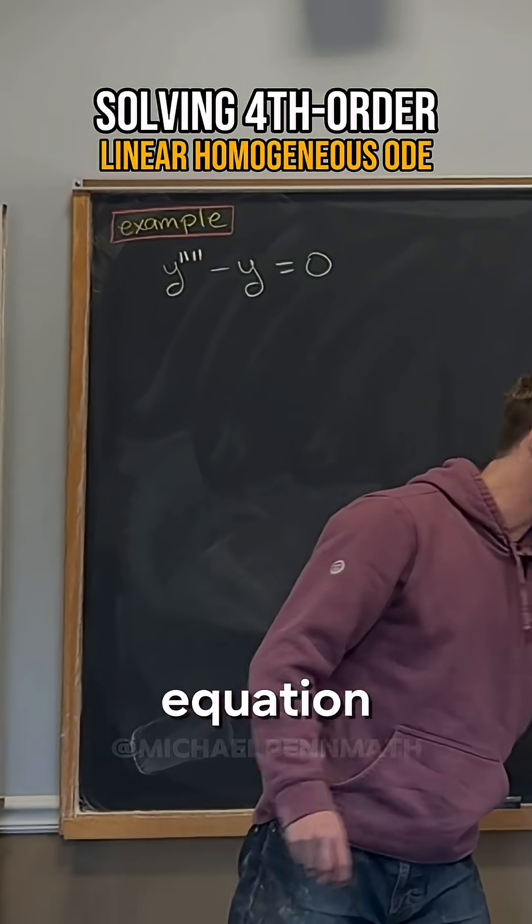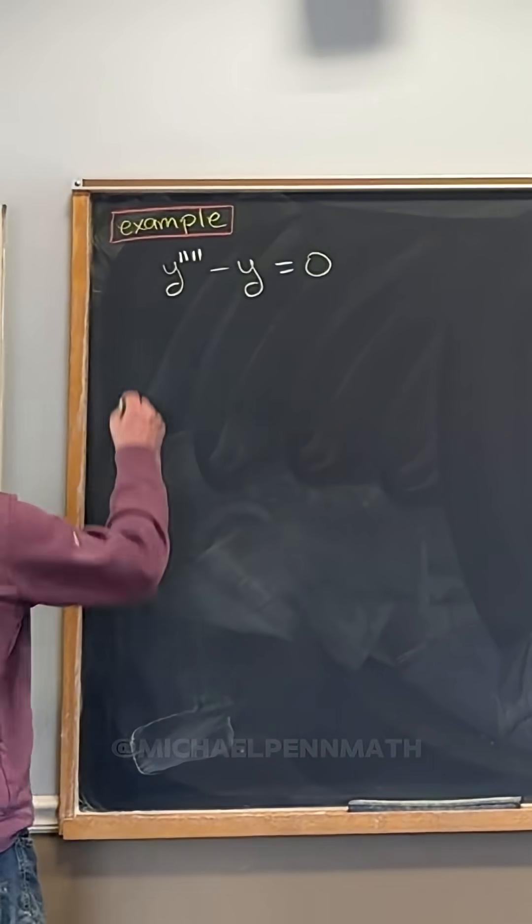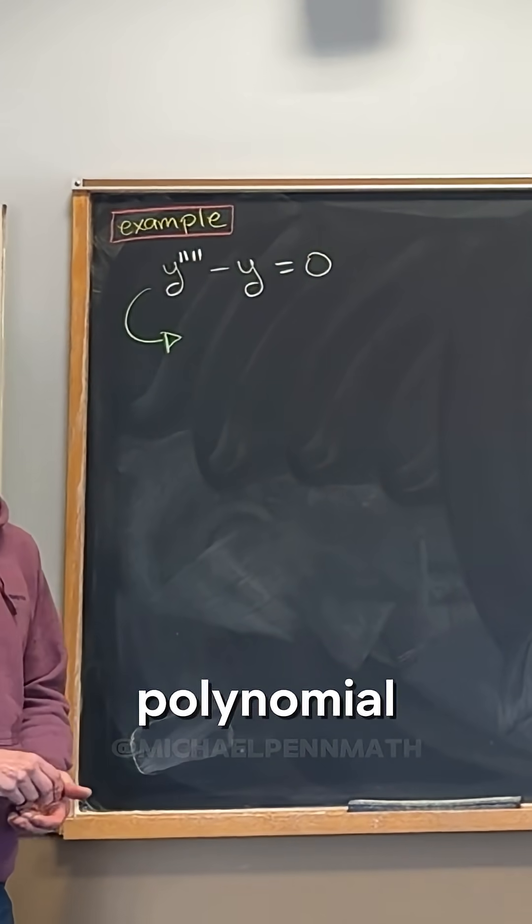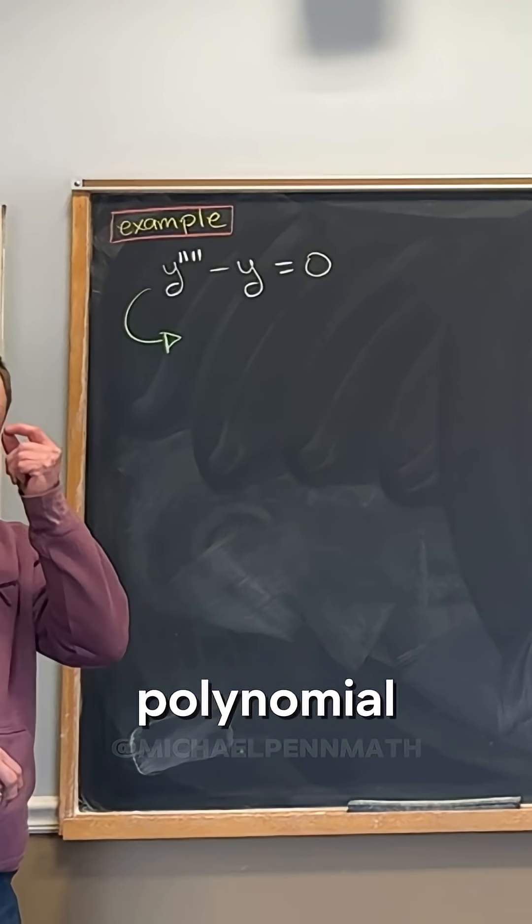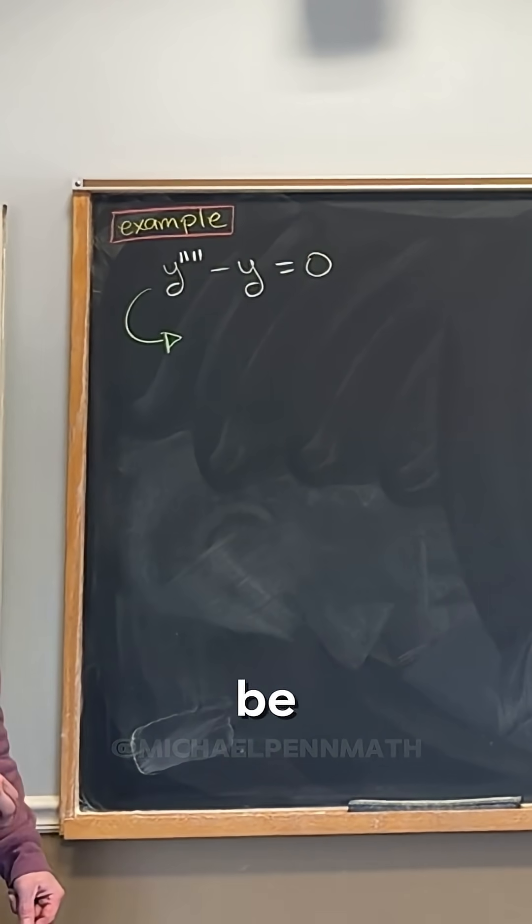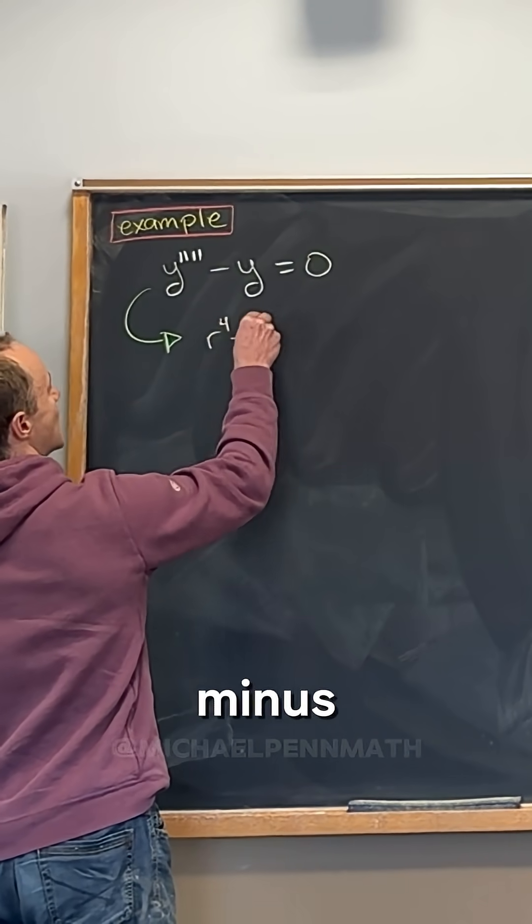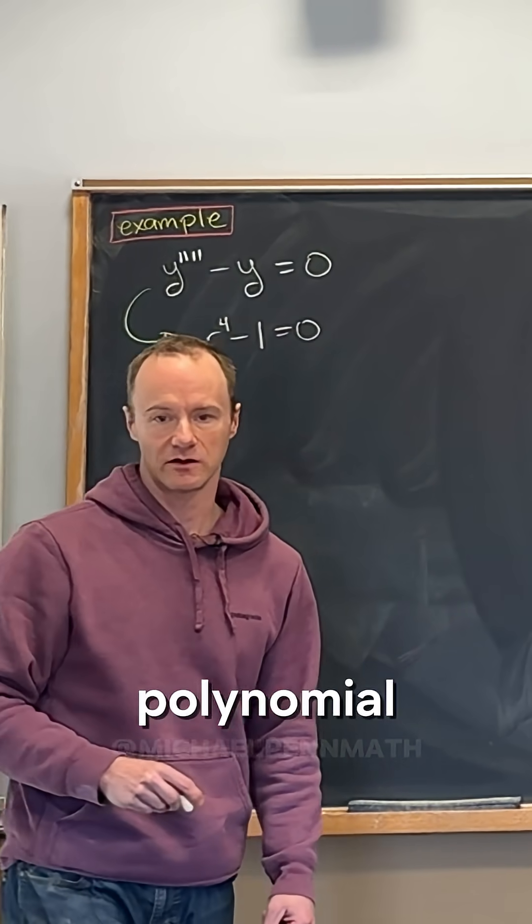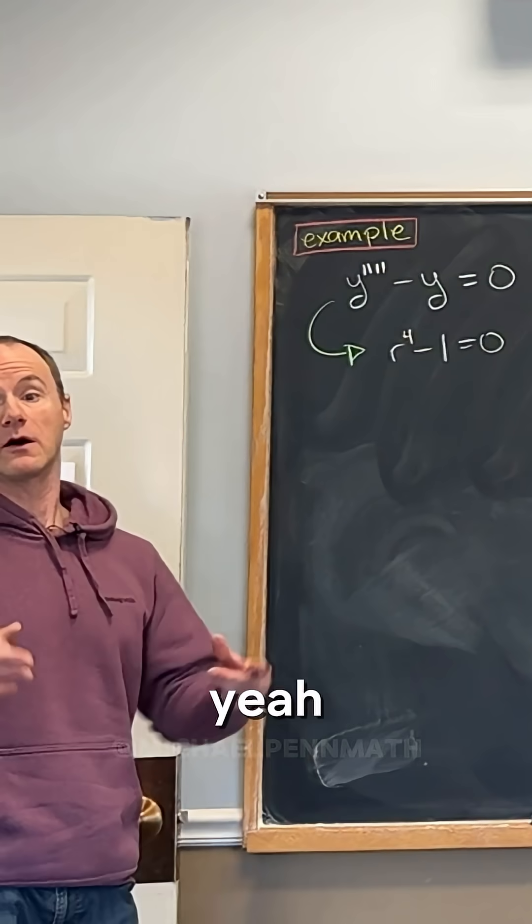So if we see a differential equation like this, there's probably a polynomial equation that we want to solve. What would the polynomial equation in this case be? Yeah, so r to the fourth minus one equals zero. Okay, so let's say we want to solve that polynomial equation. What would we do? Yeah, we would